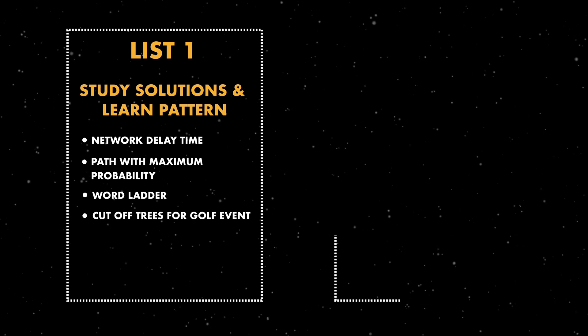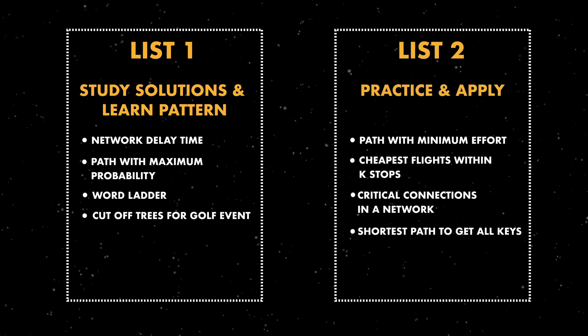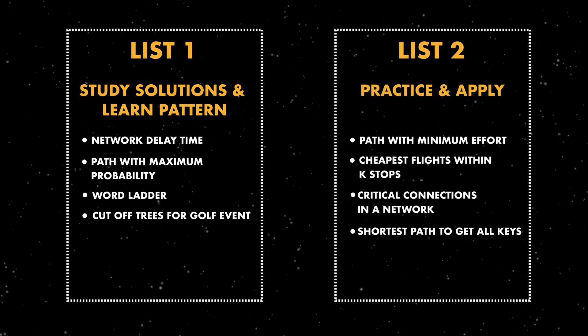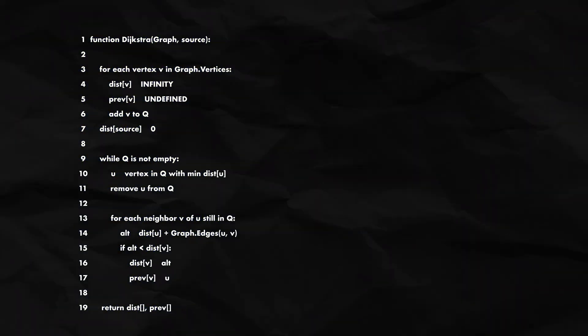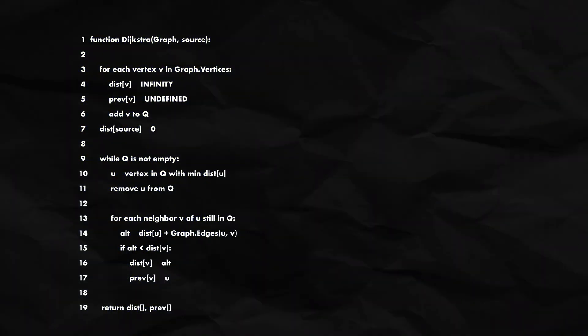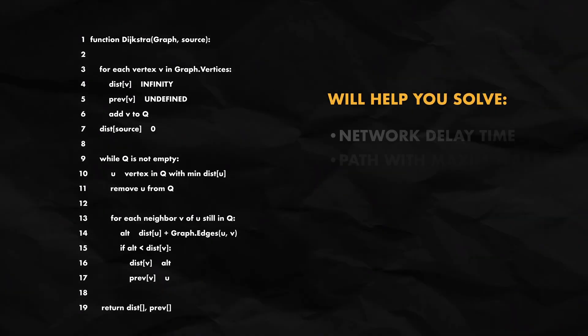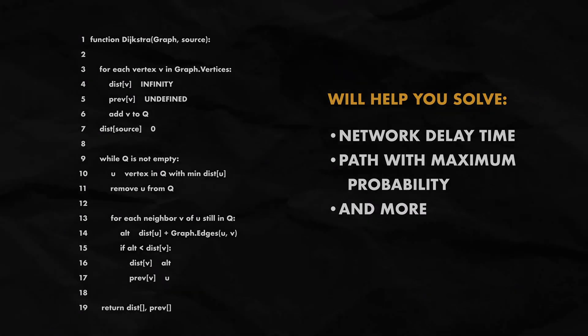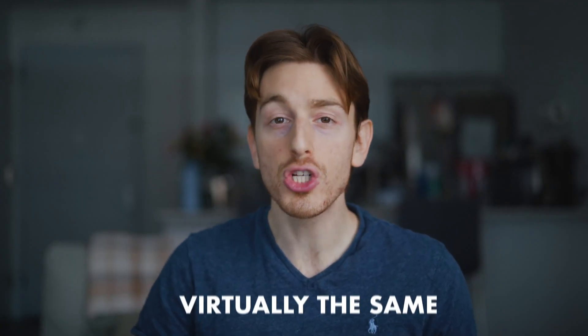In the last week, we cover shortest path problems in graphs. Even though algorithmically this is a more complicated topic, the questions themselves are relatively straightforward once you're familiar with the few patterns and implementations used to solve them. The main thing to cover is Dijkstra's algorithm — that's mostly all the theory you'll need — and it will help you solve problems like network delay time and path with maximum probability. If asked about this in an interview, the question will be virtually the same just in different wording, making implementation easier than other topics.